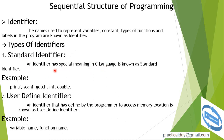What is a standard identifier? An identifier that has special meaning in C language is known as a standard identifier. For example, printf is used to display a message on the screen, scanf is used to get input from the user, int is used to store integer values in a variable, and double is used to store point or decimal values in a variable.